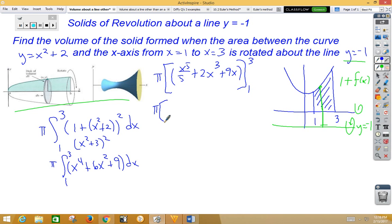So π times (243/5 + 54 + 27) minus (1/5 + 2 + 9). Combine all that together, you end up with 592π/5.